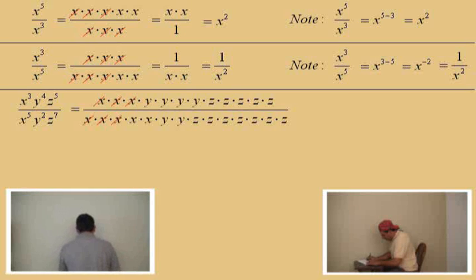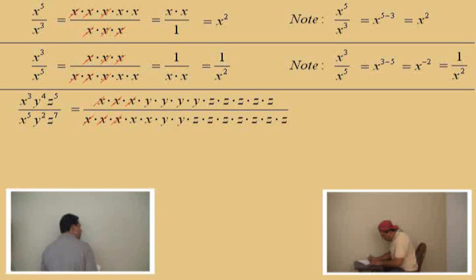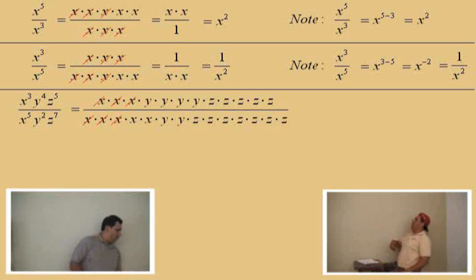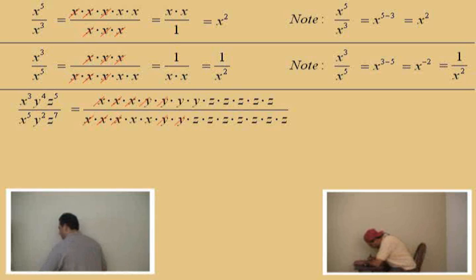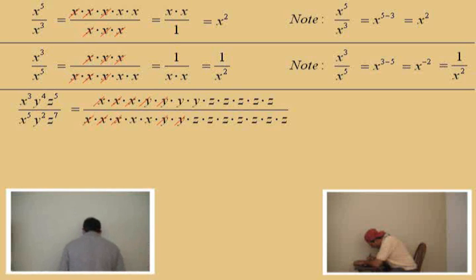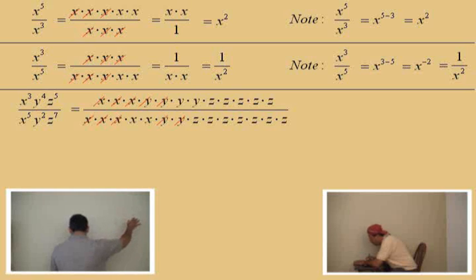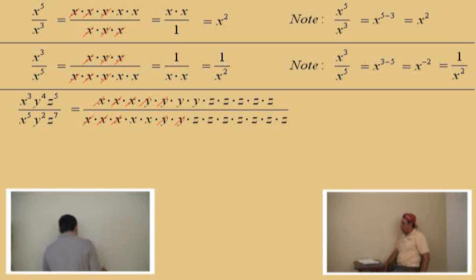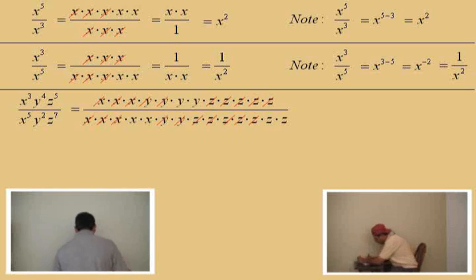Let's go to the y's. How many y's can we cancel out, Charlie? We have four y's on top and two y's on the bottom, so we can only cancel two y's out. We can't cancel more than two because we only have two on the bottom. So it appears that it will leave us with two y's on the top. Now let's go to the z's, Charlie. How many z's can we cancel out? Five — because we only have five on the top. So that leaves us with two z's on the bottom. We'll go ahead and box those.